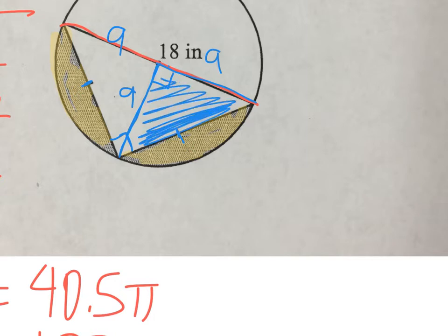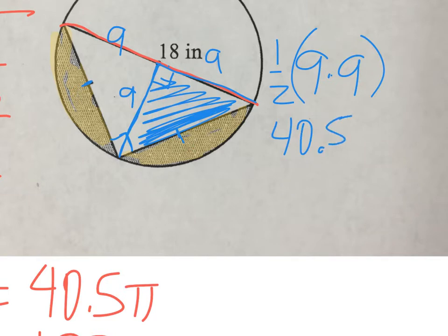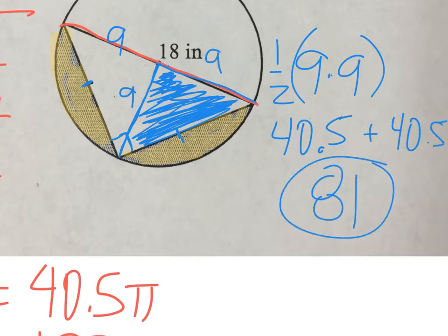I'm going to find the area of this triangle: one-half of 9 times 9, which is 40.5, half of 81. That's for this part over here. The other one is also 9 and 9, so it also has an area of 40.5, which means my triangle has an entire area of 81 square inches when I combine both halves.